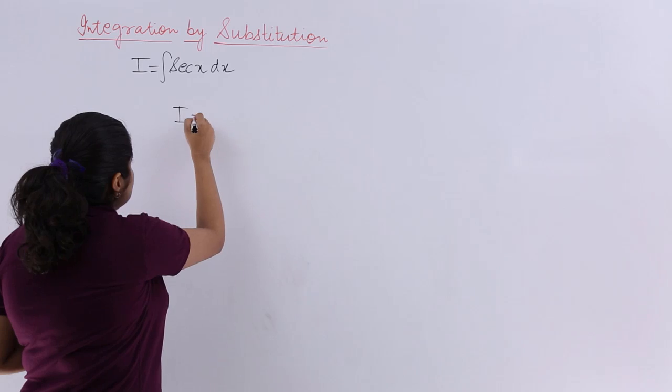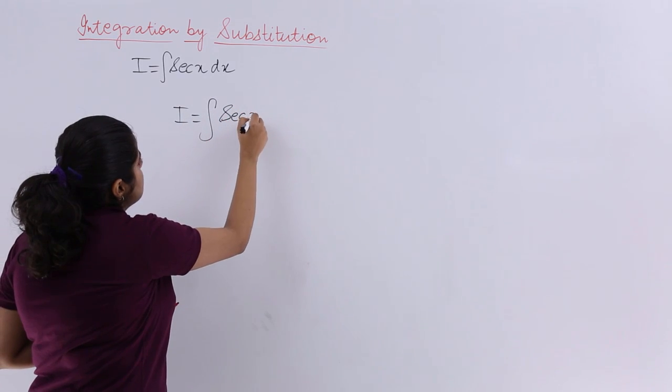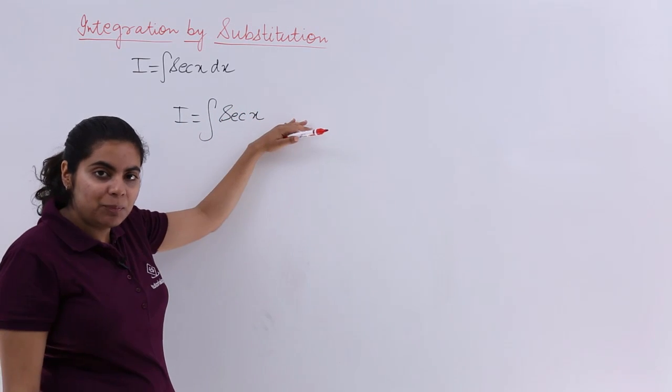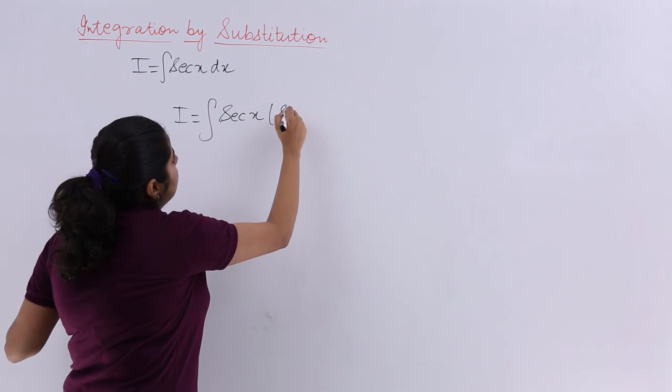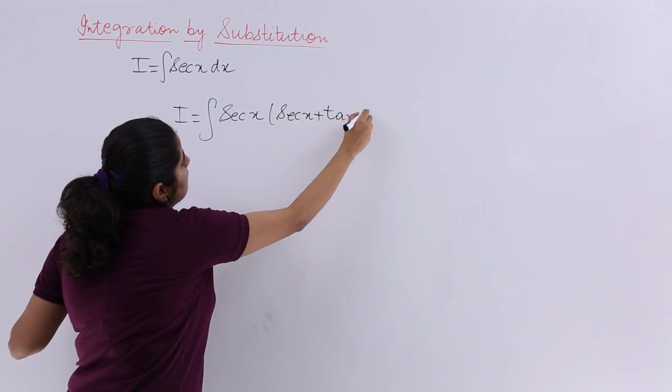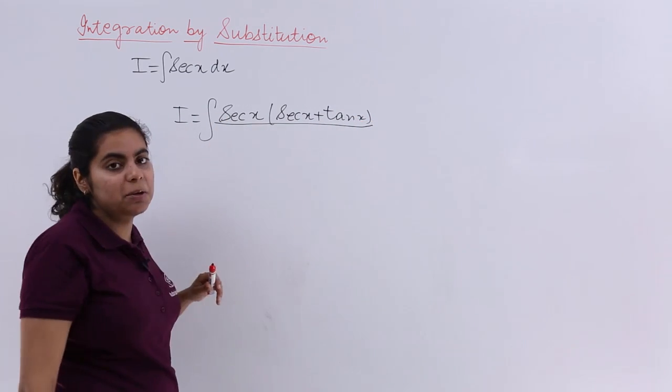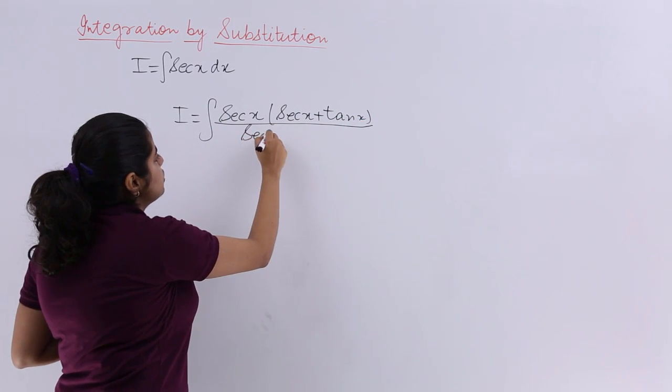I manipulate it as I equals sec(x) remains as it is. If I multiply it by something, I have to divide by the same thing. Suppose I multiply by sec(x) plus tan(x). Then I also divide by sec(x) plus tan(x). No issues with it.